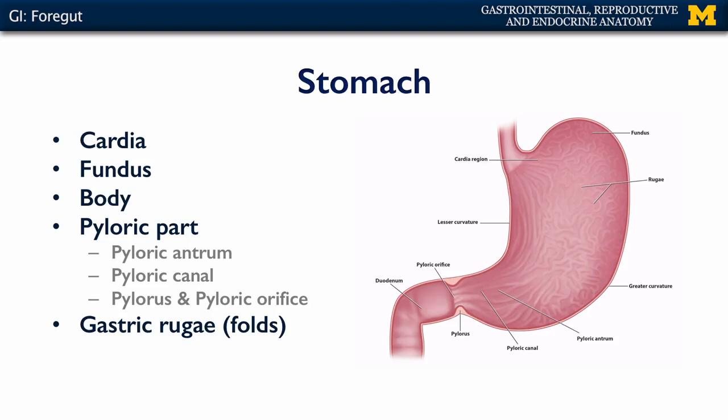The stomach itself is a very distensible J-shaped organ. In its relaxed state, the stomach contains within its walls ridges that are called rugae — gastric ridges that allow for a large amount of distension.